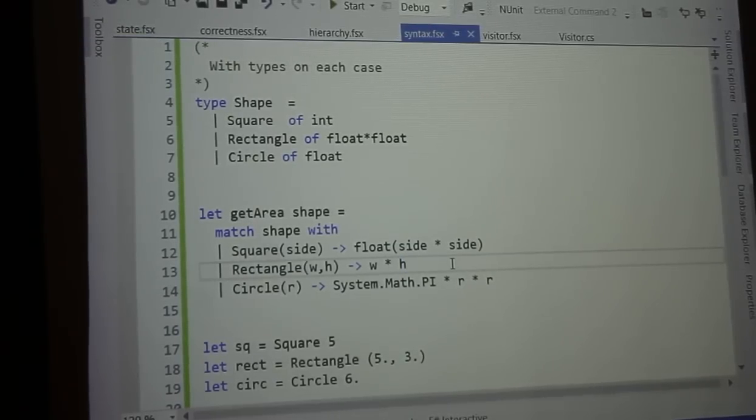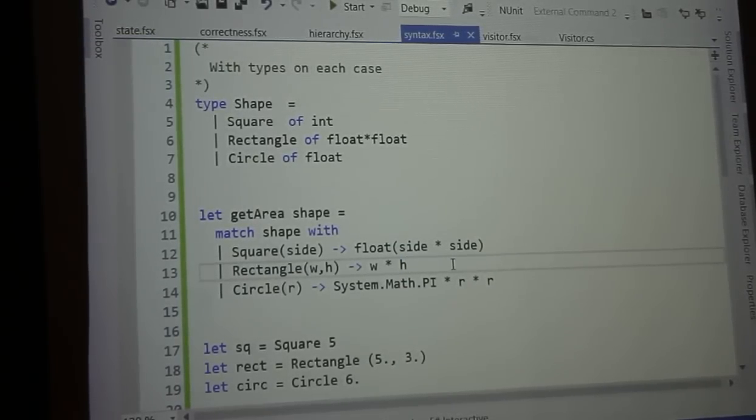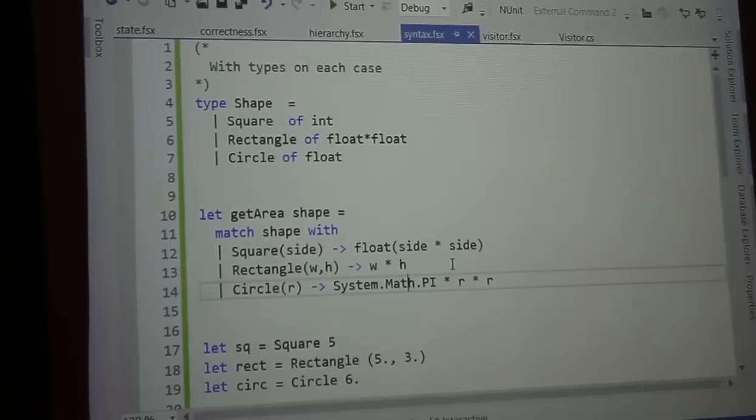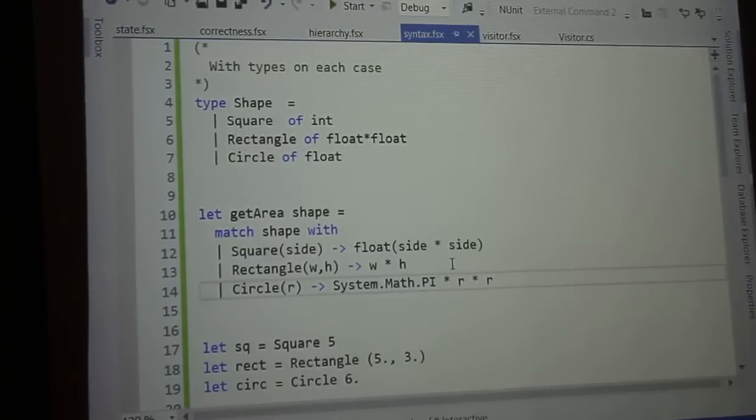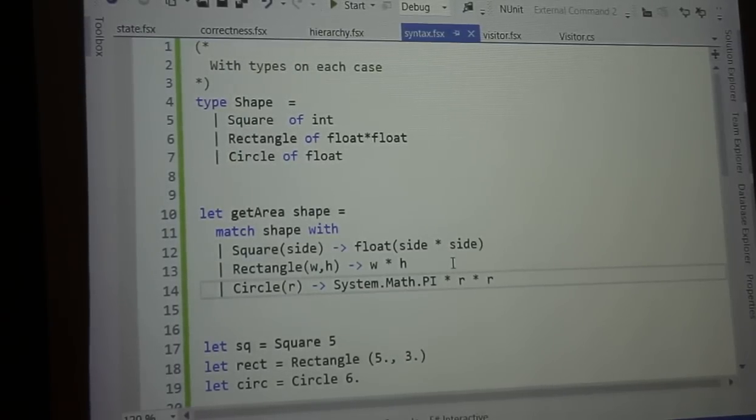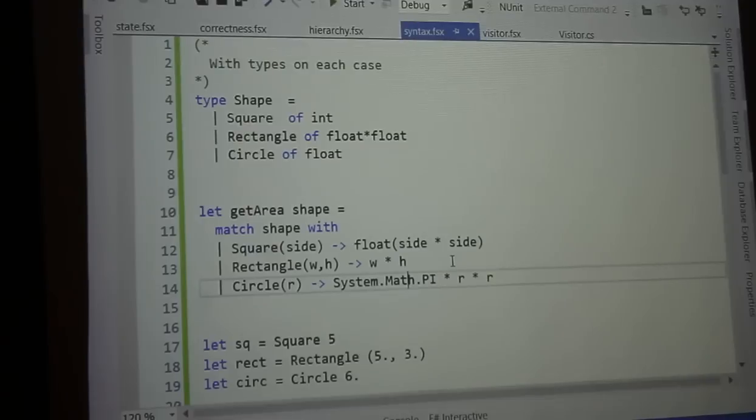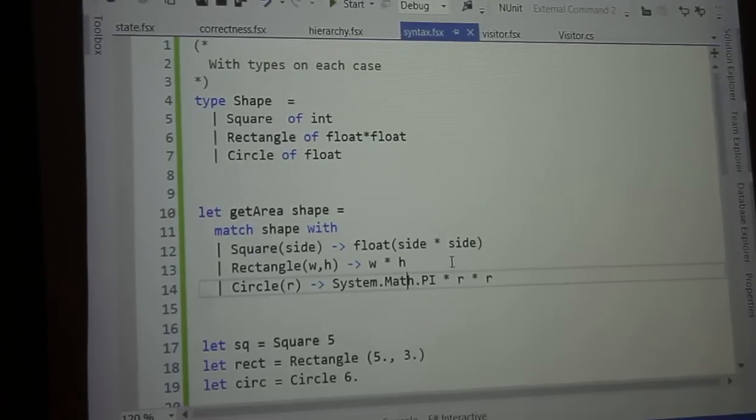So, we match a rectangle. We're going to just take width times height. And for a circle, we're going to say pi times r squared. R times r. Any questions? Any interesting thoughts that you're like, hey, what's that? I don't understand it from an F# syntax perspective.